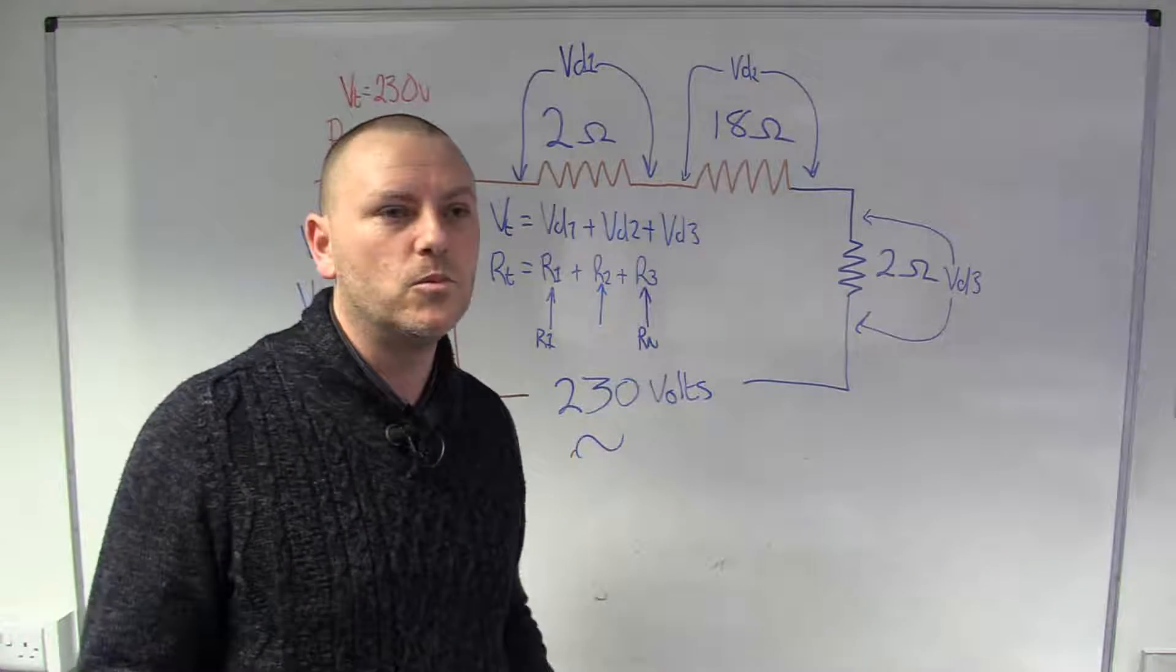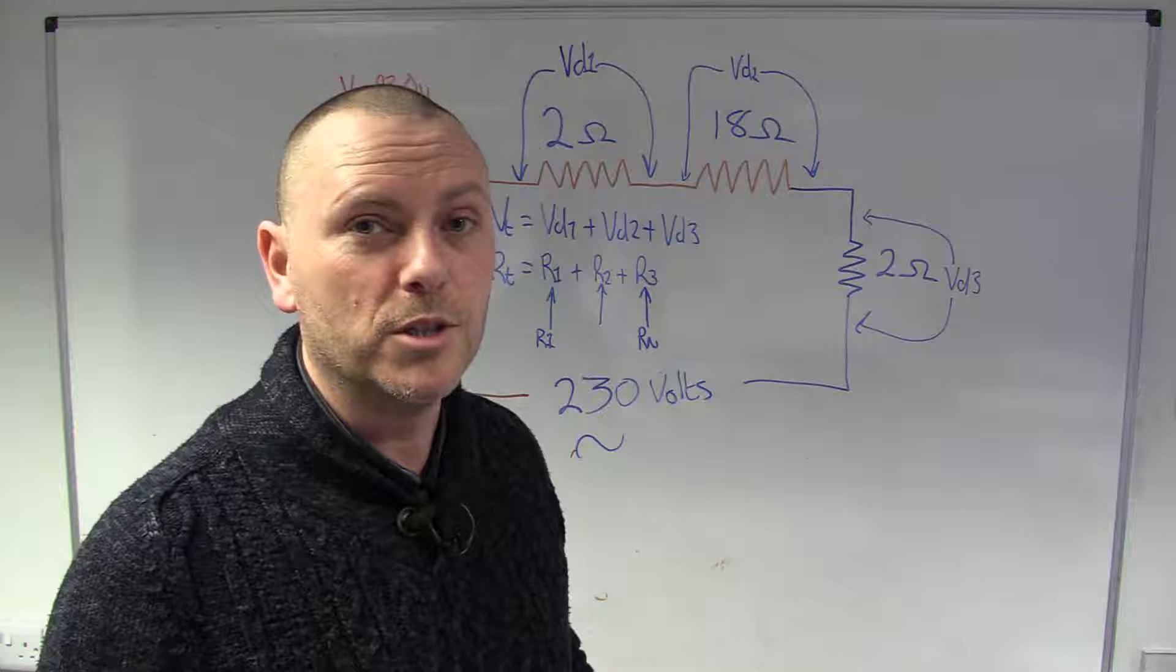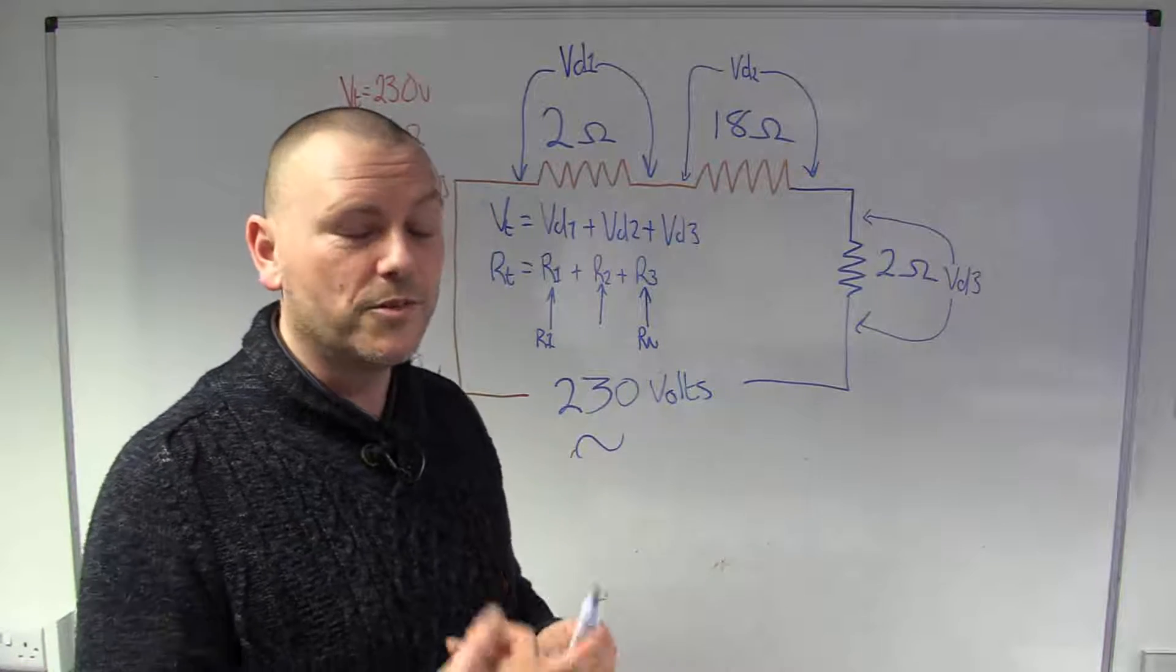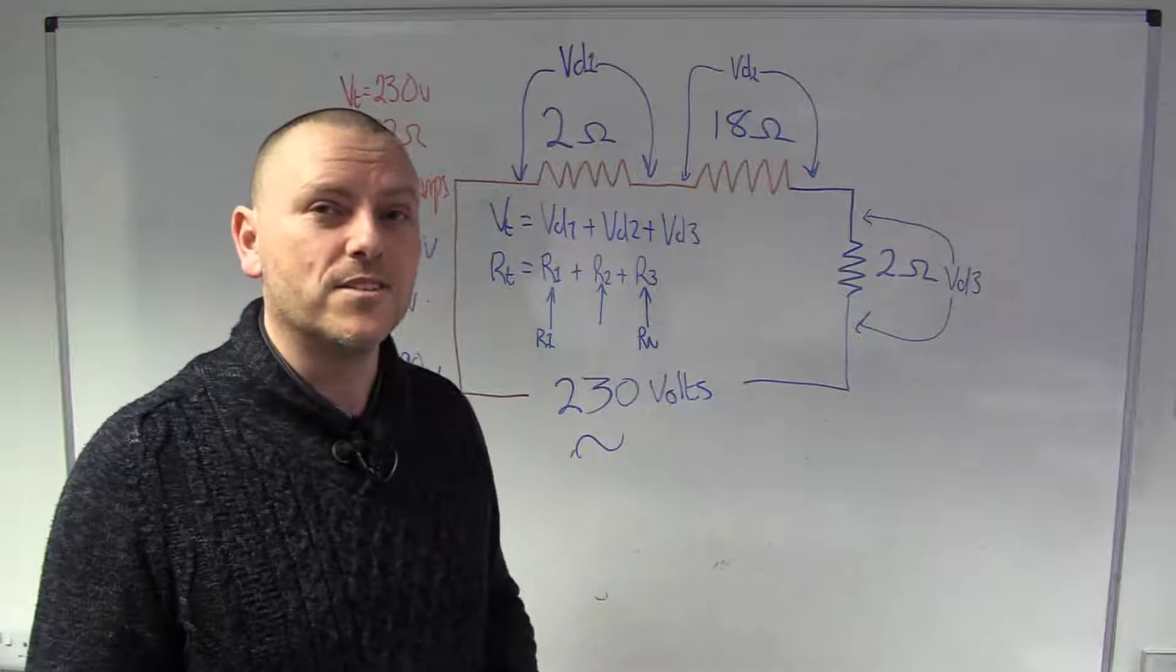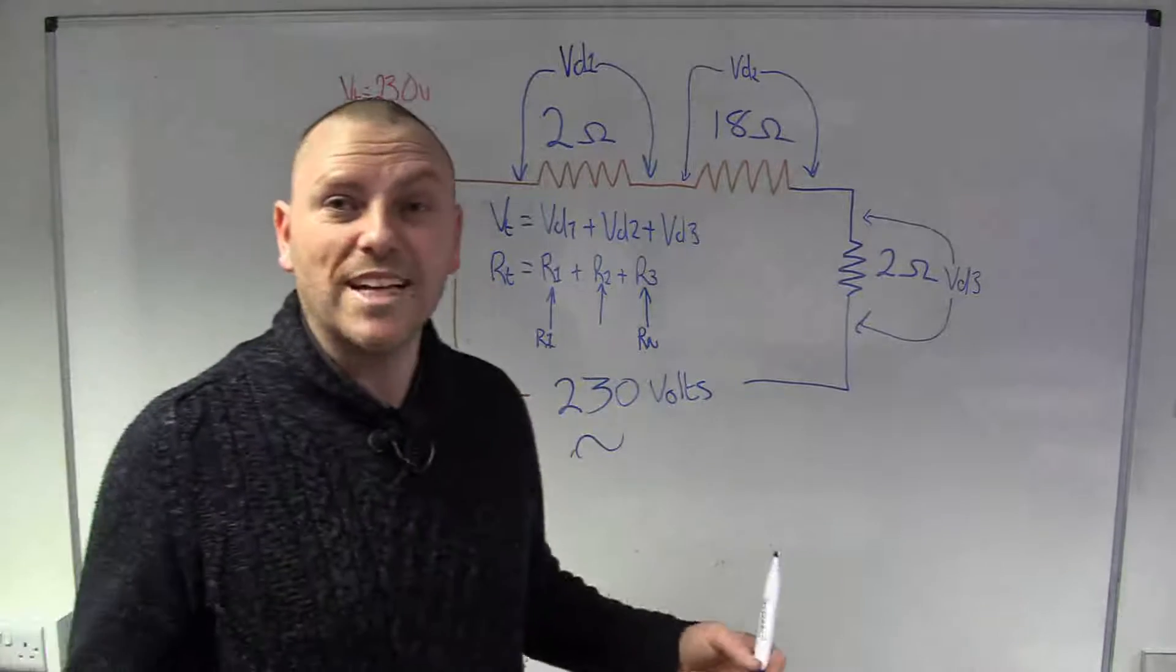And this one was our neutral one and we called that Rn. Incidentally if we were going to consider the CPC as well we call that R2 in the real world so it's important that you don't get those kind of things confused and the reason why they're R1 R2 and Rn is because we're talking about resistances and R stands for resistance.